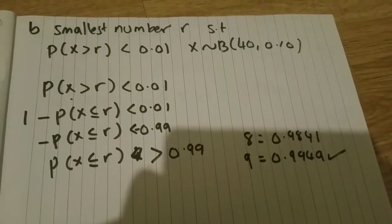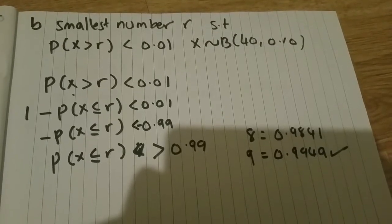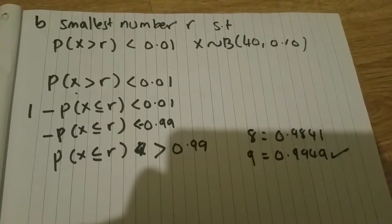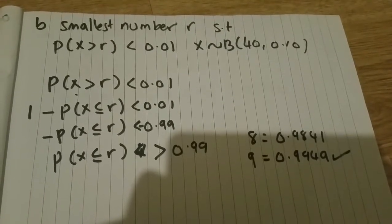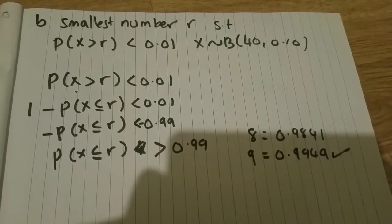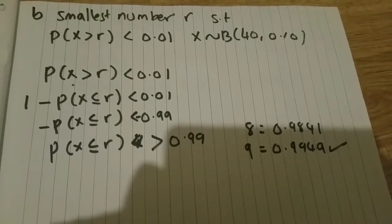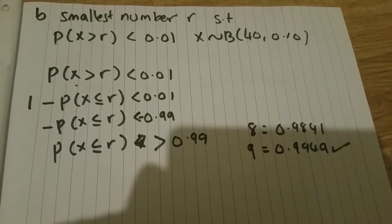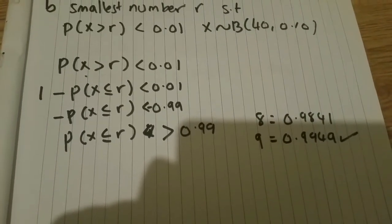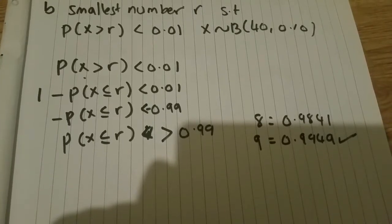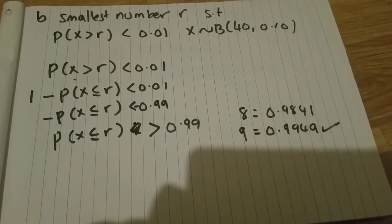Second one - we're looking for the smallest number r such that P(X>r) < 0.01. We've got X greater than r, so we know we're going to do 1 minus. If X is greater than r, that's 1 - P(X≤r) < 0.01. Rearranging by subtracting 1 from both sides, we get -P(X≤r) < -0.99. Multiply by -1, and remember that when you multiply an inequality by a negative number, the inequality switches around.